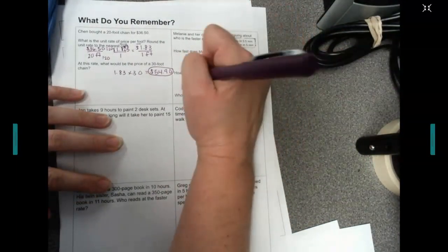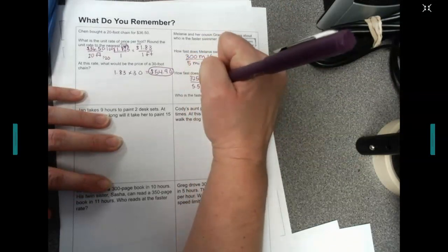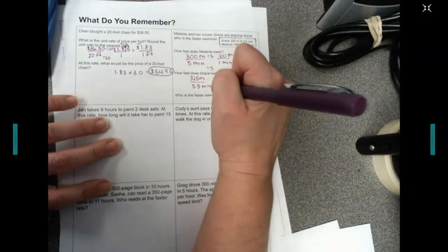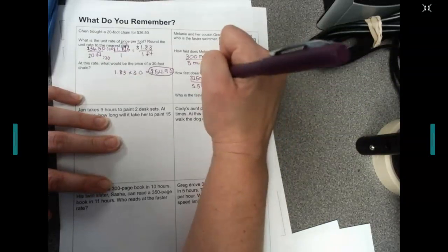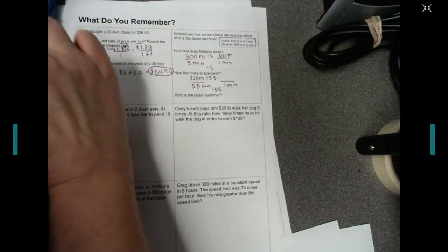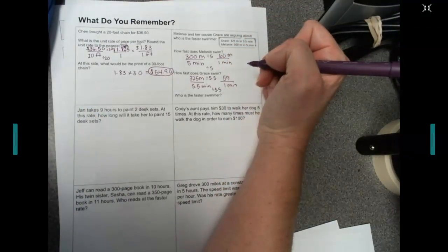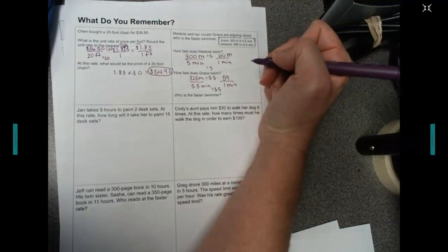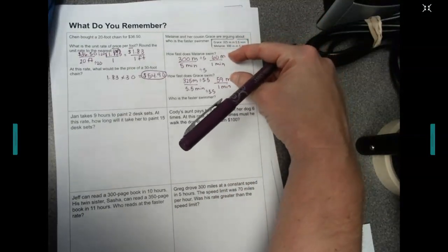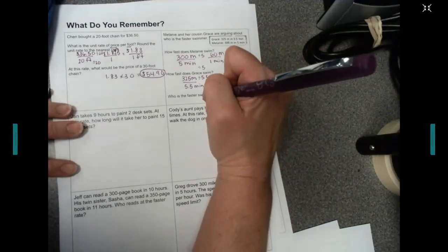Grace, hers is 325 meters in 5.5 minutes. We're going to get 1 minute on the bottom. Divide by 5.5 on the top and the bottom. So 325 divided by 5.5, Grace does 59. I'm going to round it to 59 because it's 59.0909. But that tells us the difference here. Melanie goes 1 meter longer in a minute, so the faster swimmer is Melanie here.